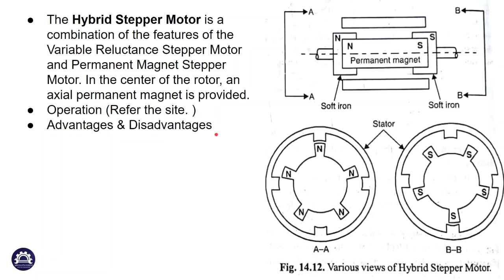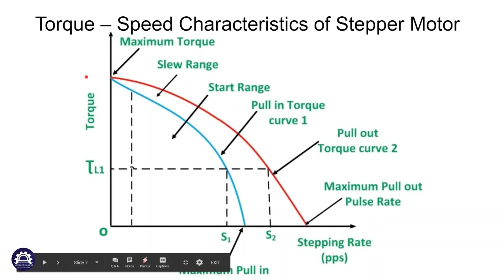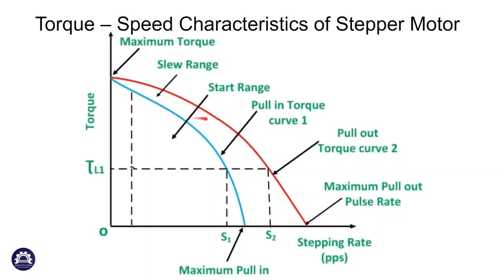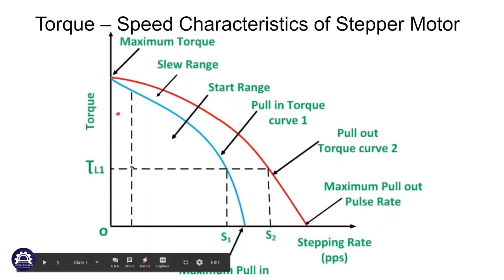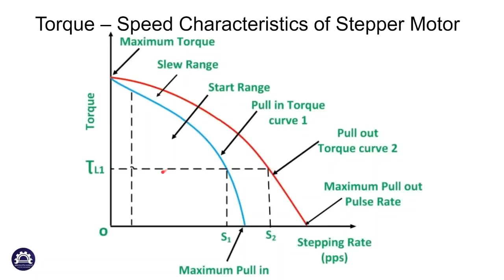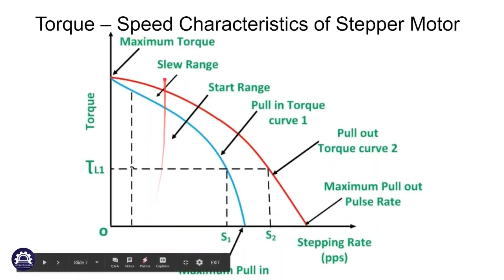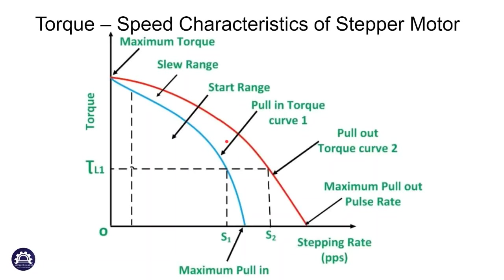The characteristics of the hybrid stepper motor include the X-axis stepping rate and Y-axis torque. The pull-in and pull-out curves define performance regions. The blue line is called the start-stop mode — the motor can start and stop without losing synchronicity. The slewing mode is the region above the start-stop region.